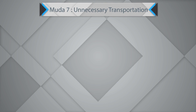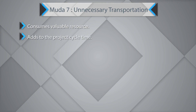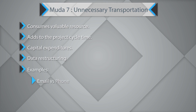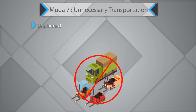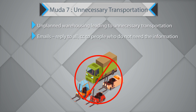The seventh waste is unnecessary transportation. It consumes valuable resources, adds to project cycle time, leads to capital expenditures, and leads to data restructuring. Examples include making several emails versus phone calls to your customer, unnecessary sharing of files to unneeded users, unplanned warehousing leading to unnecessary transportation, email responses that are reply-to-all, and a storehouse in the factory that is far from the operations area.